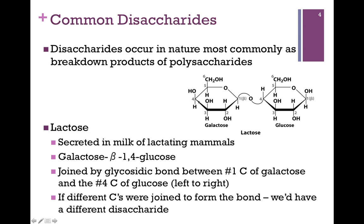In other words, we've joined carbon number 1 of galactose with carbon number 4 of glucose to form that glycosidic bond — we call that a beta bond. Remember, beta means batter up, and if we read from left to right, that tells us that it's a beta link, pictured here as a curve up. In some texts it's pictured as a line, but it's always pictured as up to indicate beta. And so that makes this a beta-1,4 bond. If we had the same sugars but joined them in different ways, we'd have a different disaccharide.